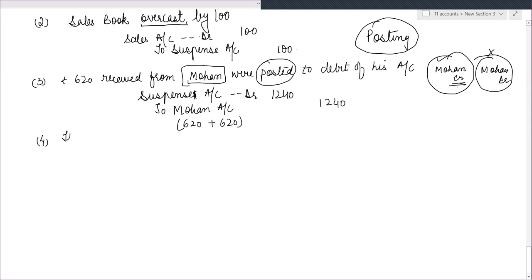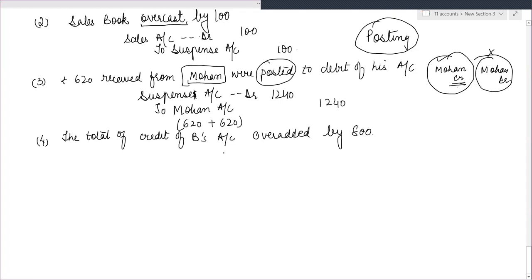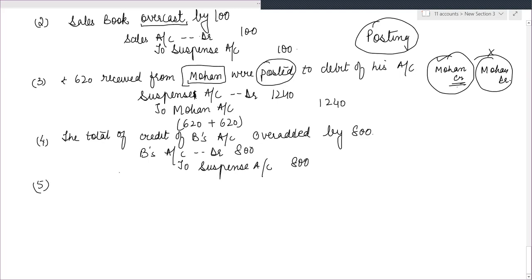Next: the total of the credit side of B's account was over-added by 800. Credit of B's account was overstated. To rectify it, we reverse it — we debit B's account to remove the excess credit, with the debit going to suspense account.